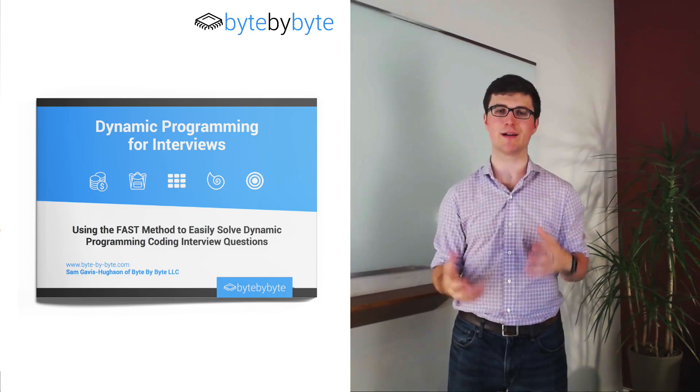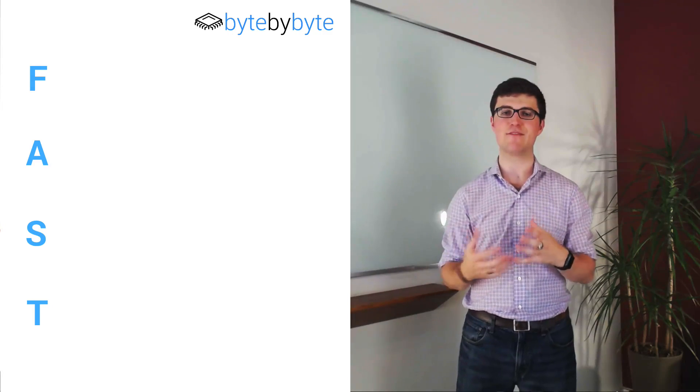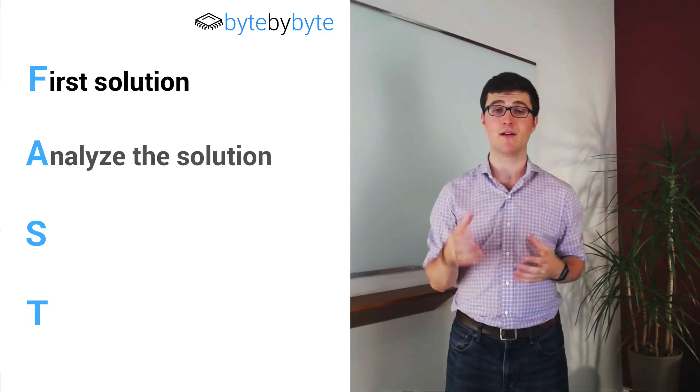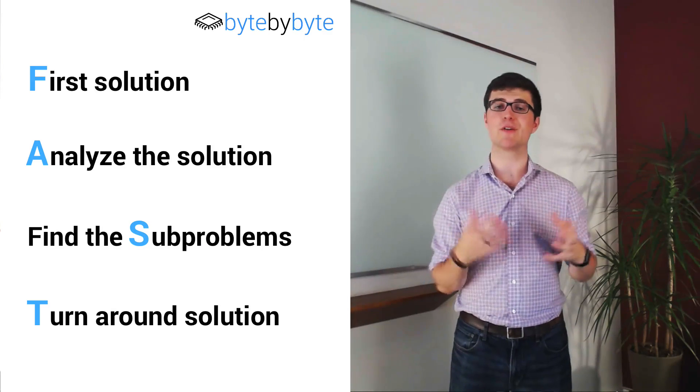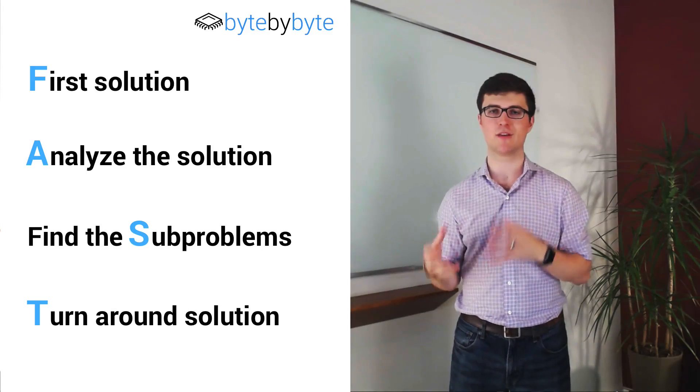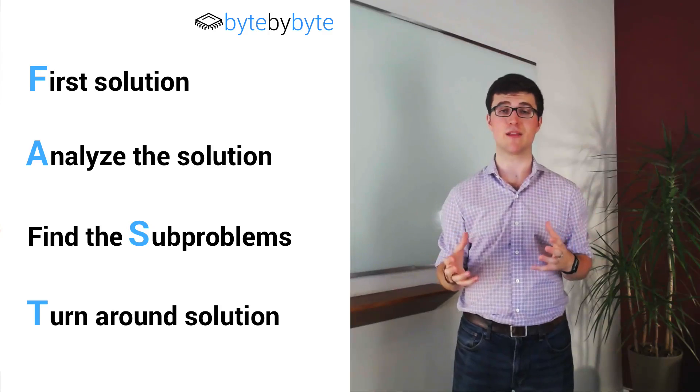The second section of the book introduces the FAST method, which is the method that I've developed for solving all dynamic programming problems. It takes you all the way from starting with a brute force solution to having an optimized dynamic programming solution. By starting with that first solution, analyzing it, finding the sub-problems, and then turning around your solution, you'll get the best solution every time and you don't even have to think about it.